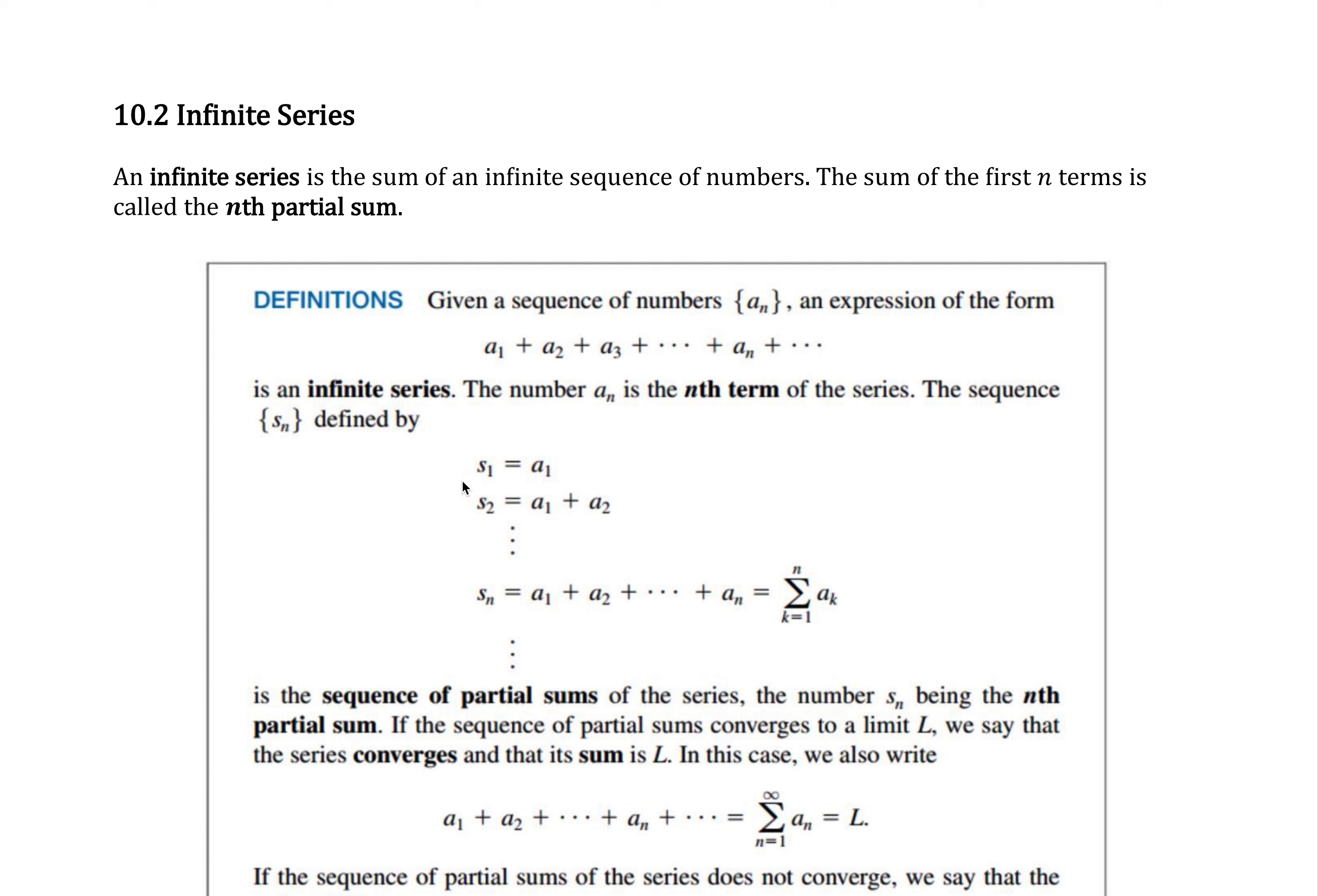Like I said before, we talk about partial sums, so the first partial sum is just the first term of the sequence. The second partial sum is the sum of the first two terms of the sequence, down to the nth partial sum, which is the sum of the first n terms of the sequence, and it's often written in this sigma summation notation here.